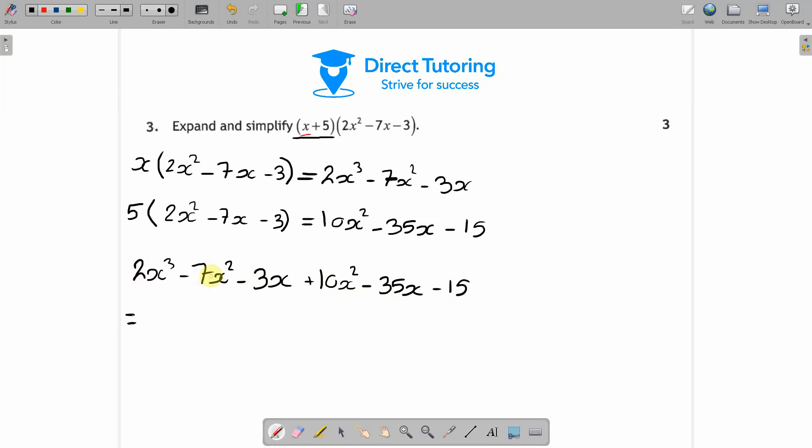So then all we have to do is collect the like terms. There's no other x cubed. So it's just going to be 2x³, minus 7x² plus 10x² is plus 3x², minus 3x minus 35x is minus 38x, minus 15.